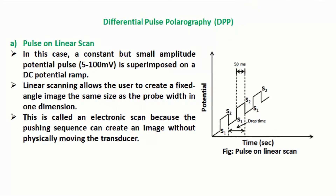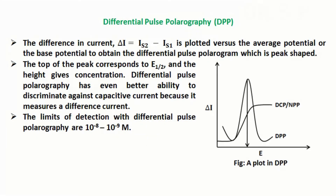The second is Pulse on Linear Scan: a constant but small amplitude potential pulse, normally 5 to 100 mV, is superimposed on a DC potential ramp. The difference in current, delta I equals I_S2 minus I_S1, is plotted versus the average potential or the base potential to obtain the differential pulse polarogram, which is peak shaped.